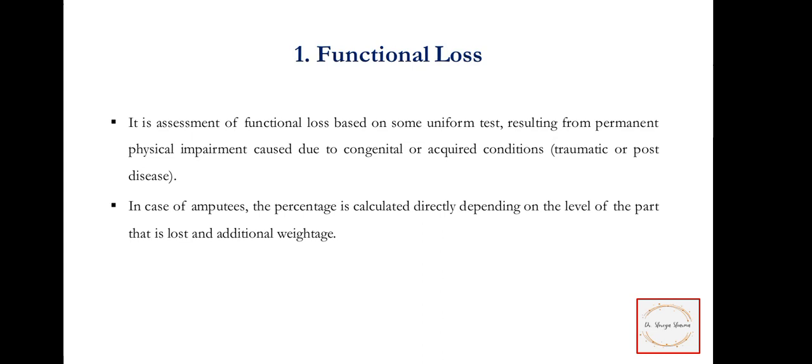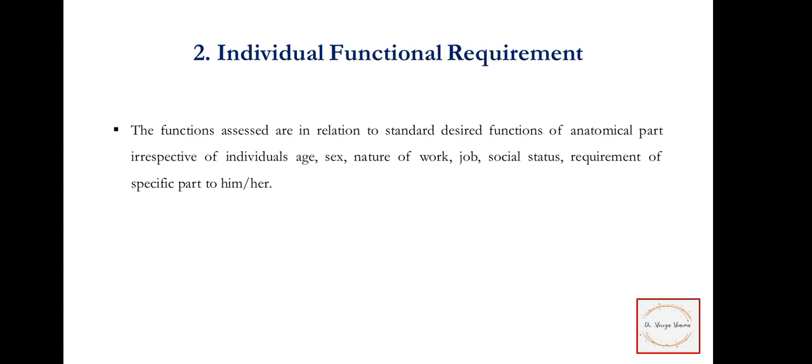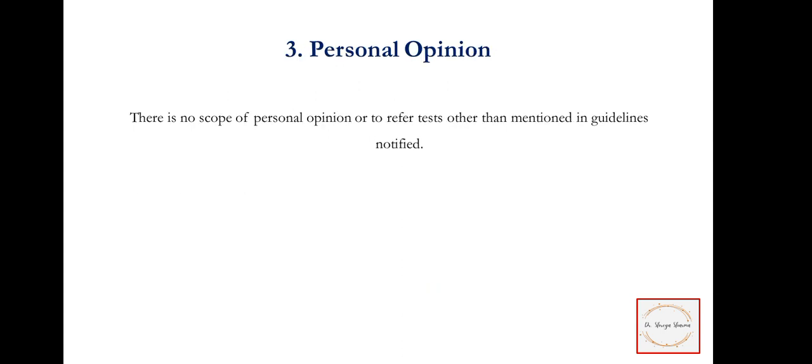If there is an amputation case, the percentage is calculated directly depending upon the level of the part that is lost and additional weightage. The second principle is individual functional requirement — the functions assessed during disability evaluation are in relation to the desired functions of the anatomical part, irrespective of the age, nature, or sex of the patient. Third is personal opinion — when we evaluate patients properly and take measurements, we write it down; there is no scope for personal opinion.